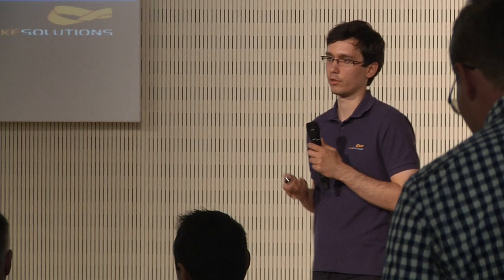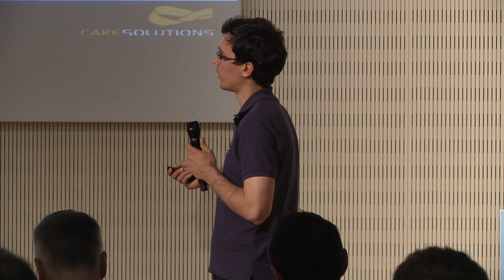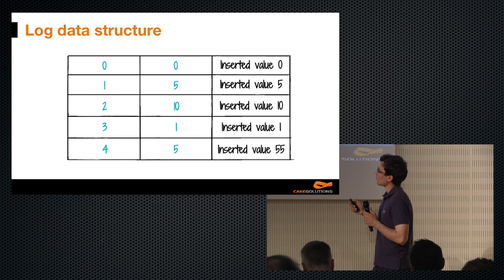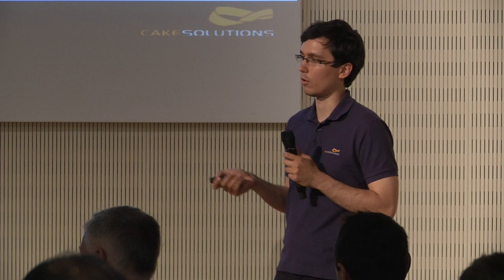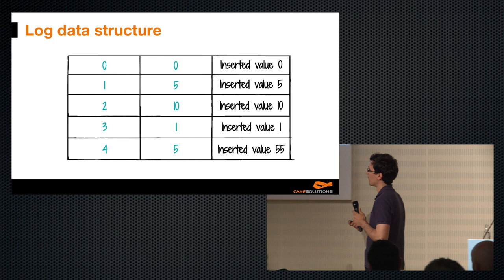Akka Persistence uses an event-sourced journal — essentially a log data structure. Log is an extremely simple but very useful data structure. We always only append new events at the end of the log, so we never change or delete records. It defines a single order of operations — every time we read the log, it will always have the same order. Also, we only need a single number, an offset, and using just this single number we know where we are in the log structure. It's used in many places where durability and fault tolerance are required.